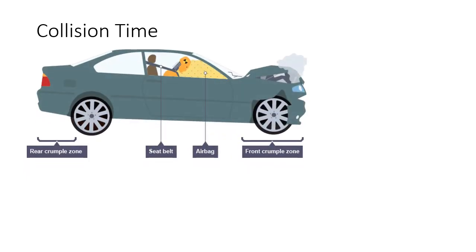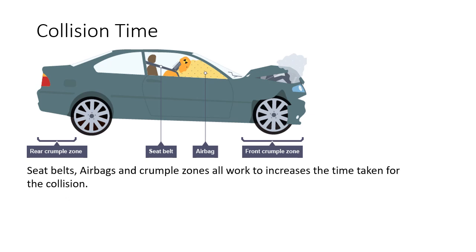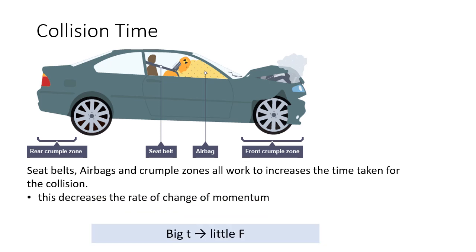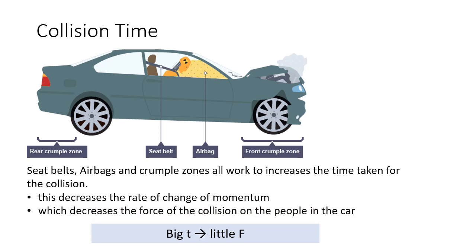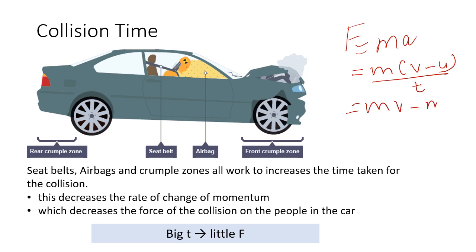Irrespective of which safety method it is — seat belts, airbags, or crumple zones — the main idea behind all of them is to increase the time of collision. Why? It decreases the rate of change of momentum, which decreases the force of collision. From Newton's second law, Force equals mass times acceleration, which equals m(v minus u) divided by t — that is mv minus mu divided by t. The quantity mv is momentum.